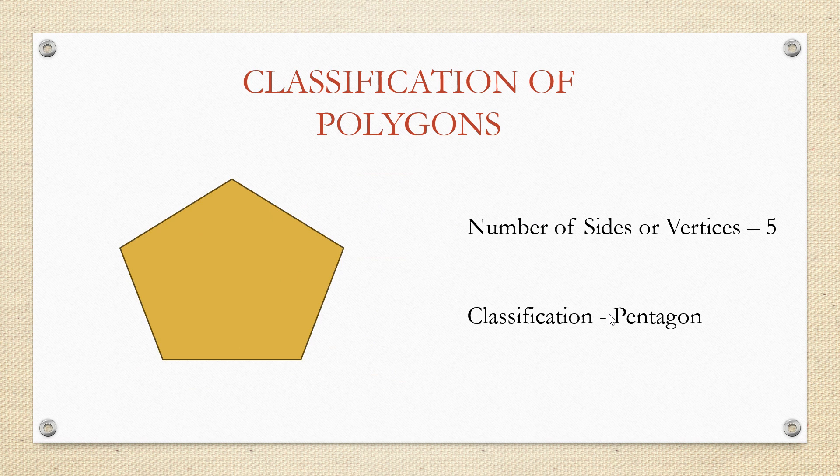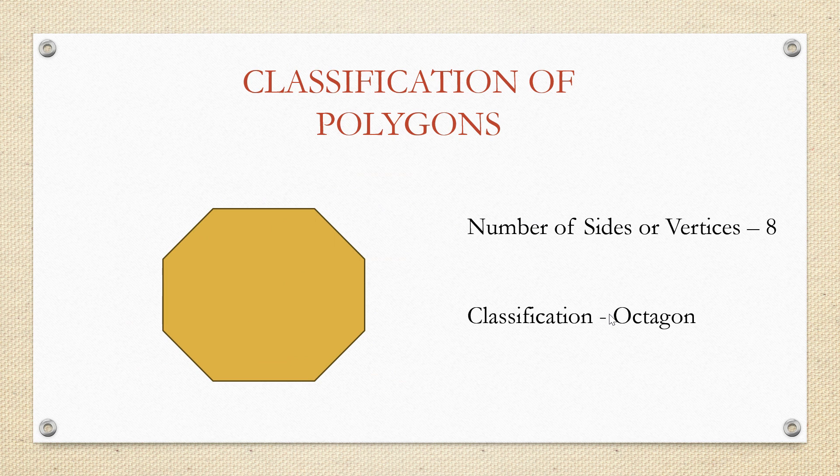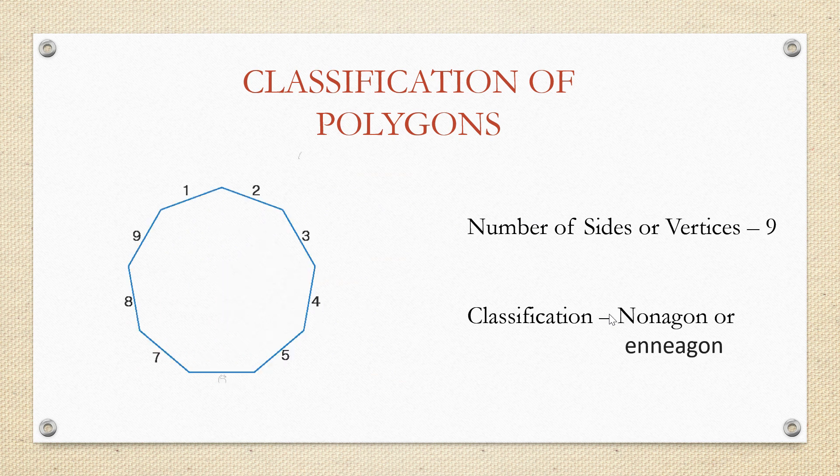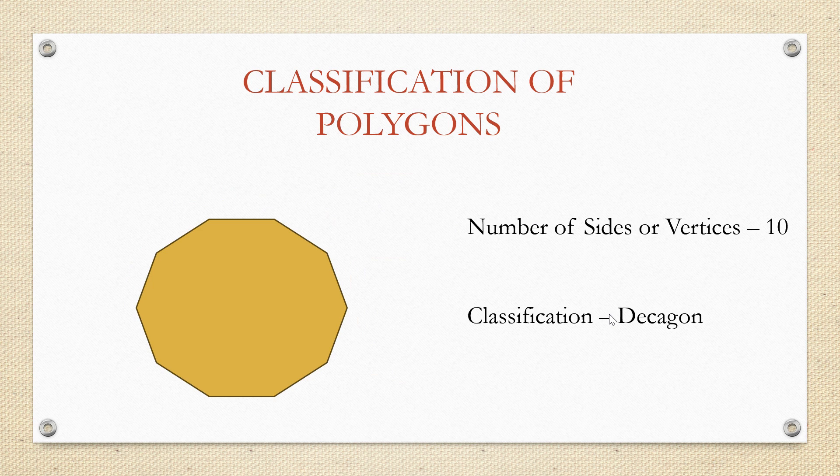Five, pentagon. Six, hexagon. Seven, heptagon. Eight, octagon. Nine, nonagon. Ten, decagon. Similarly, if we have n number of sides, we write it as n-gon.